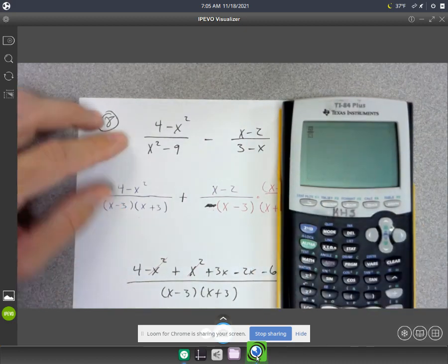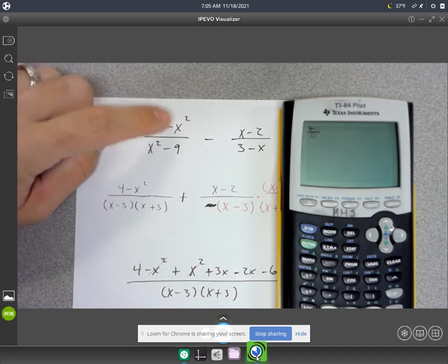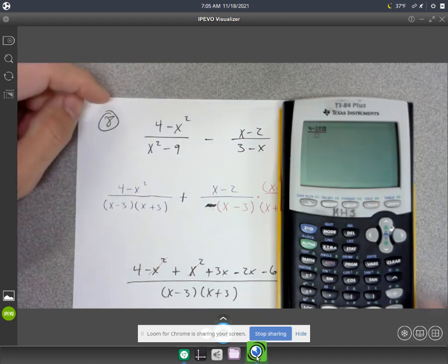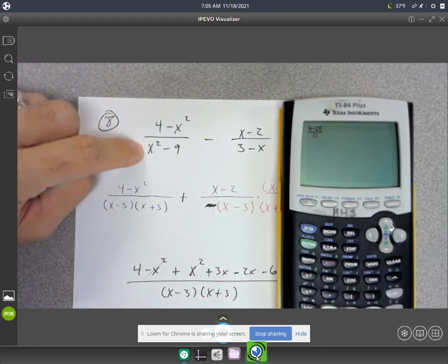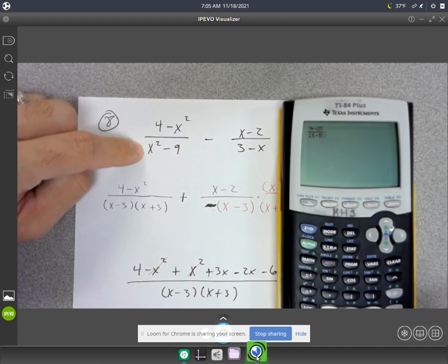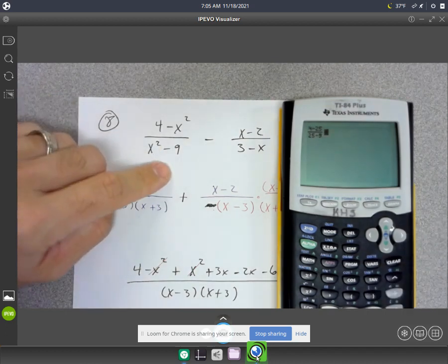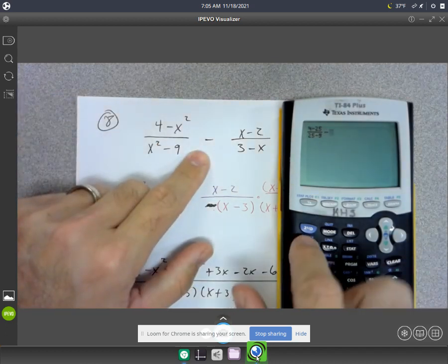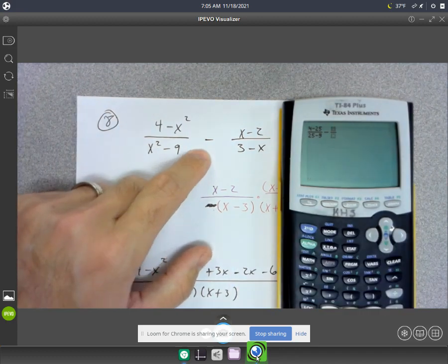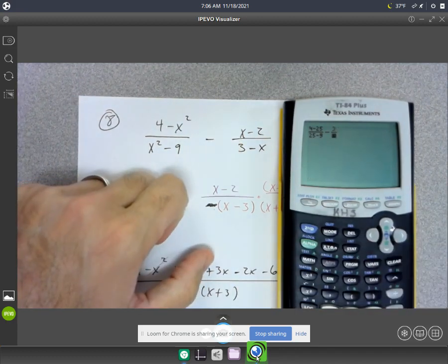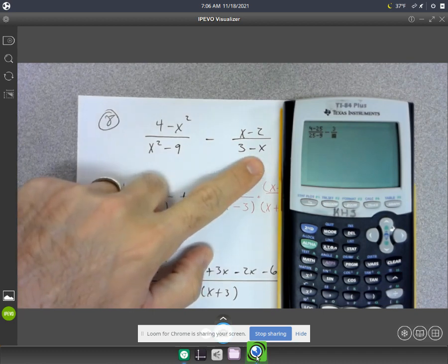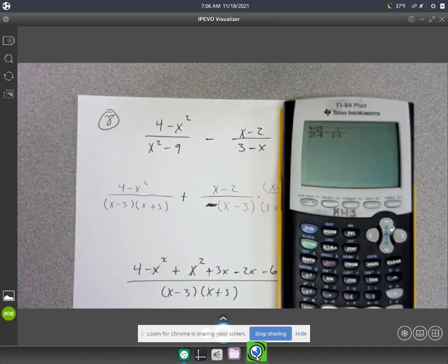Alpha y equals. All right. It's going to be 4 minus 5 squared. And then it's going to be 5 squared minus 9. And then minus alpha y equals. 5 minus 2 is 3. 3 minus 5. Oh. Let's put it 3 minus 5. There we go. All right. The calculator says it's 3 over 16.